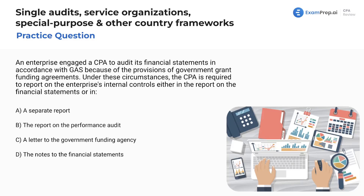Last question: an enterprise engaged a CPA to audit its financial statements in accordance with governmental auditing standards because of government grant funding agreements. The CPA is required to report on the enterprise's internal controls either in the report on financial statements or — is it a separate report, a report on the performance audit, a letter to the government funding agency, or in the notes to the financials? The report should describe the scope of testing of compliance and internal control, and present results or refer to a separate report. Final answer: letter A — a separate report.